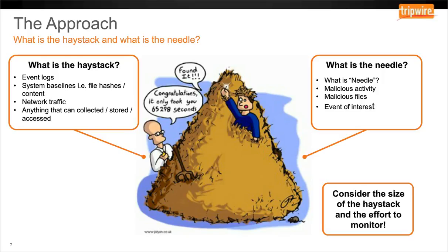This could be something like a known malicious hash of an infected file, or events of interest such as failed login attempts followed by a successful login attempt. Then there's size. This is ultimately what I'm going to focus on. Size is the reason so much time and money is wasted on detecting or finding the proverbial needle in the haystack. A lot of companies are under the impression that as their estate or haystack grows, so should the level of effort around detecting the malicious threat. This does not necessarily need to be the case.